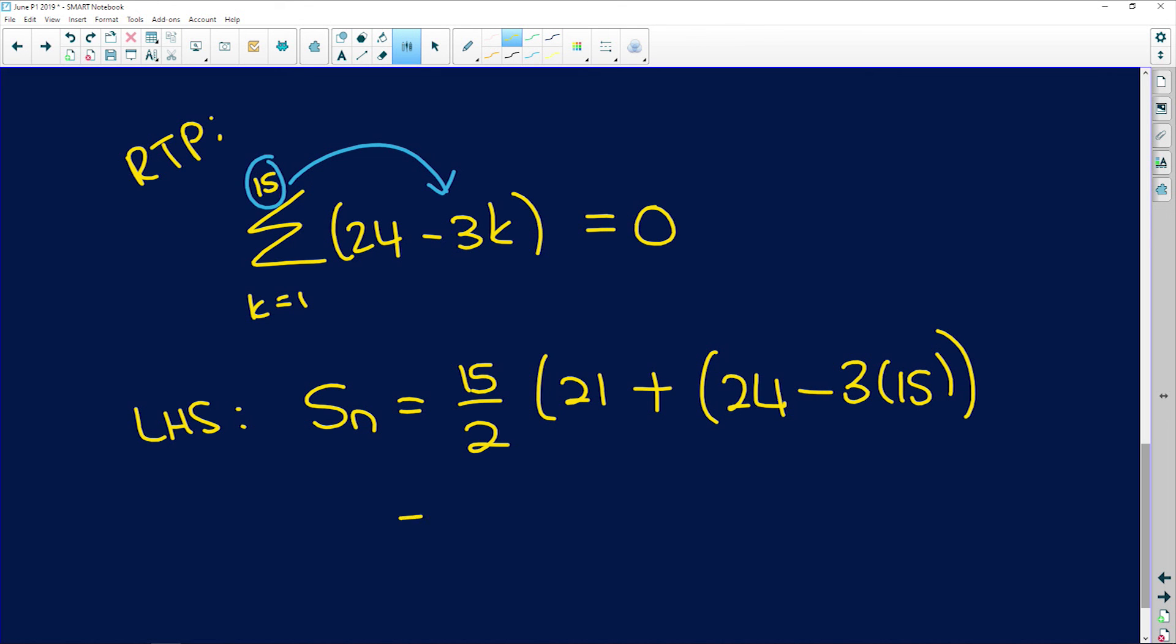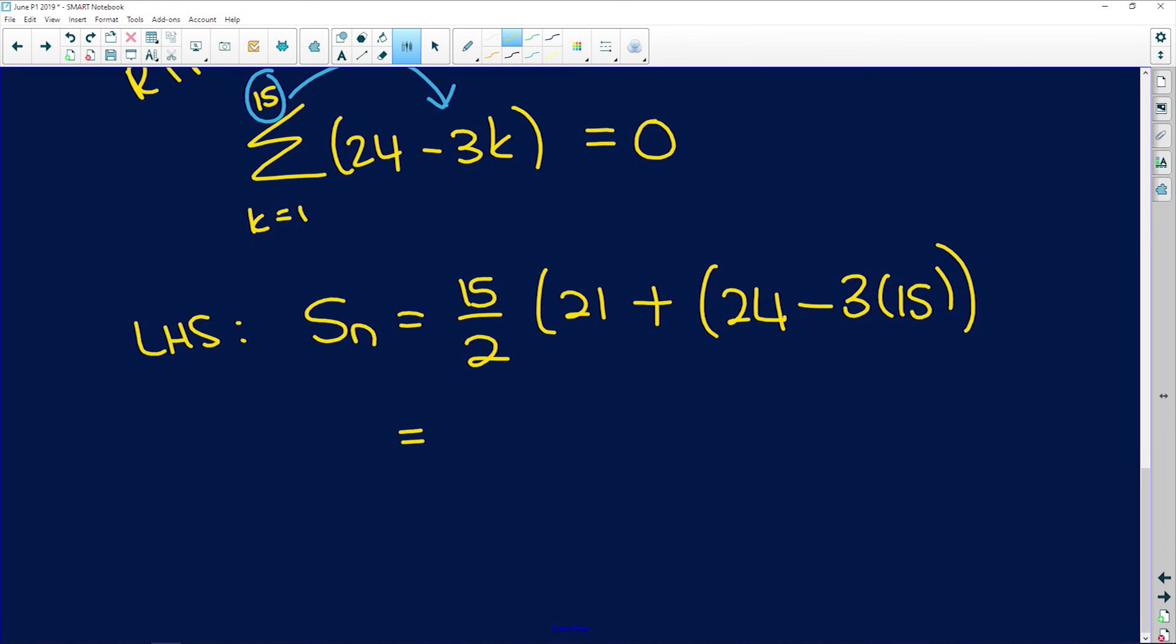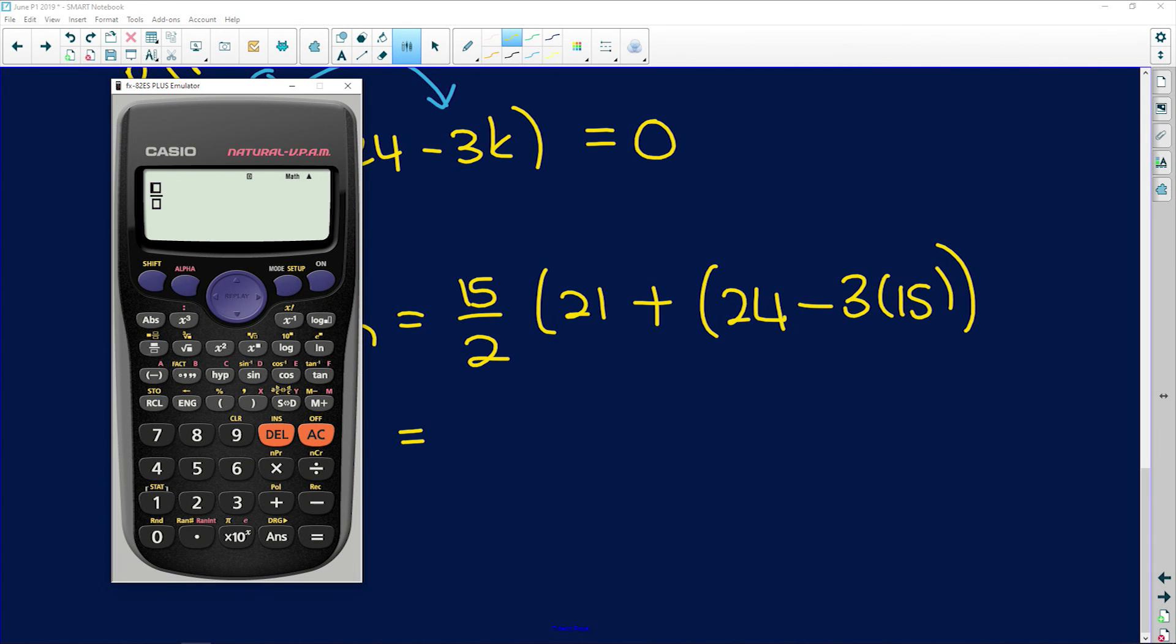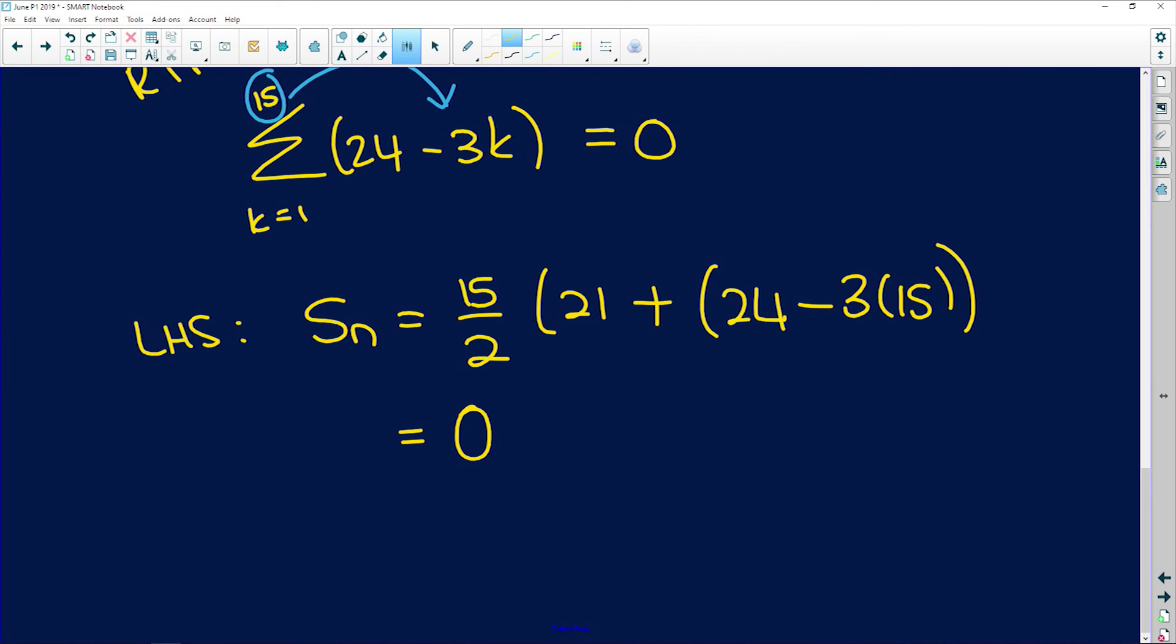So if we keep going, we can simply put all of this into our calculator. 15 divided by 2 multiplied by 21 plus 24 minus 3 times 15, which is 45, and that gives us 0.